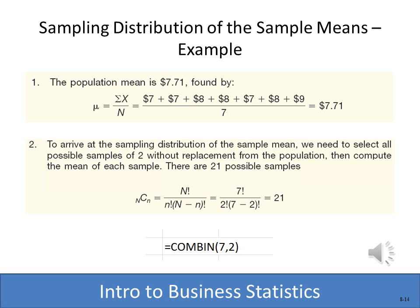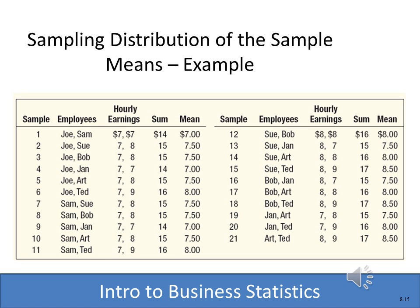For the sampling distribution of the sample mean, we first determine how many possible samples of two there are using the combination formula. With a population of N=7 and sample size n=2, there are 21 different combinations — confirmed using Excel's COMBIN(7,2) function. The 21 combinations include pairs like Joe & Sam, Joe & Sue, Joe & Bob, and so on. This could become very unwieldy with a large population, but it's an important concept.